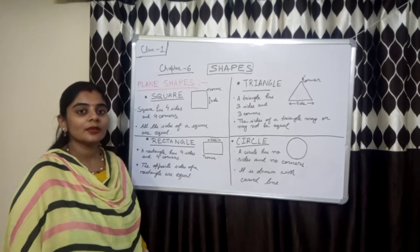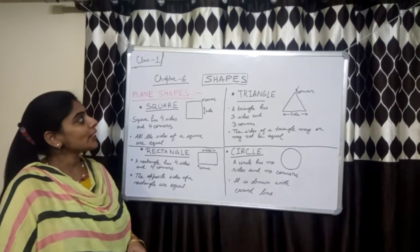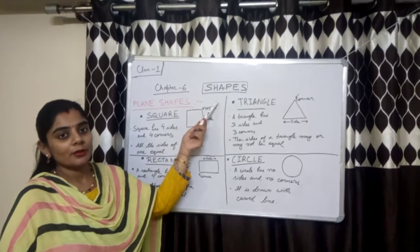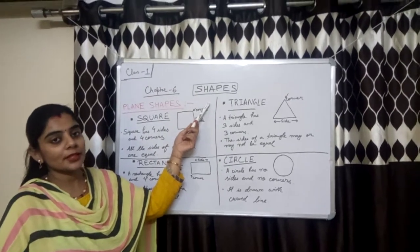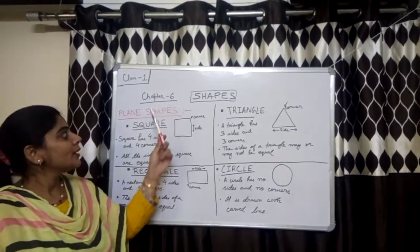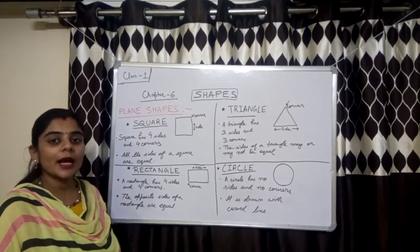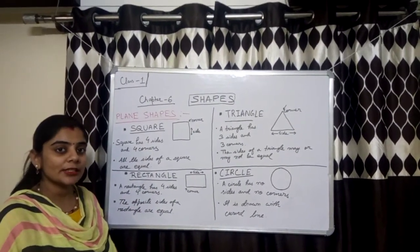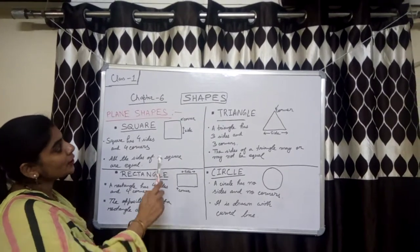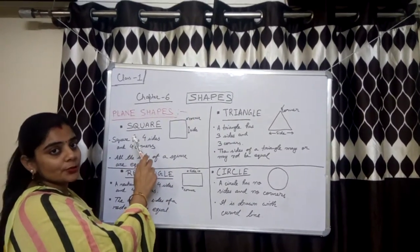Hello students. Today I am going to start chapter number 6, that is Shapes, from your maths textbook. Shapes are of two types: plane shapes and solid shapes. First I will explain what plane shapes are.